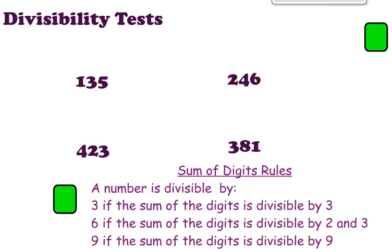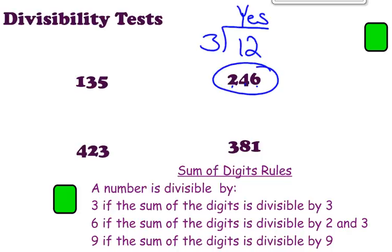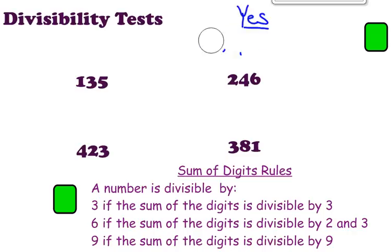Let's look at 246. We add up the digits: 2 plus 4 equals 6, plus another 6 equals 12. Is 12 divisible by 3? Yes — so that means 246 is also divisible by 3. We're not solving for the answer; we're just confirming yes or no, can this be divided by 3.